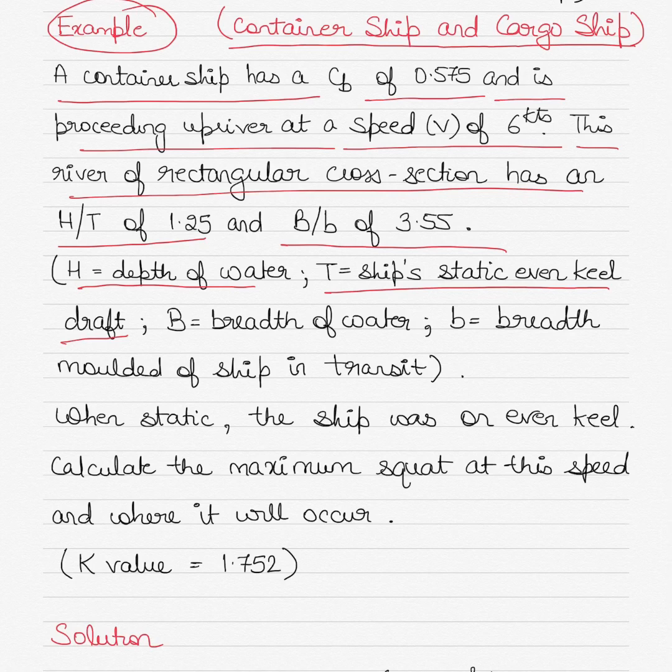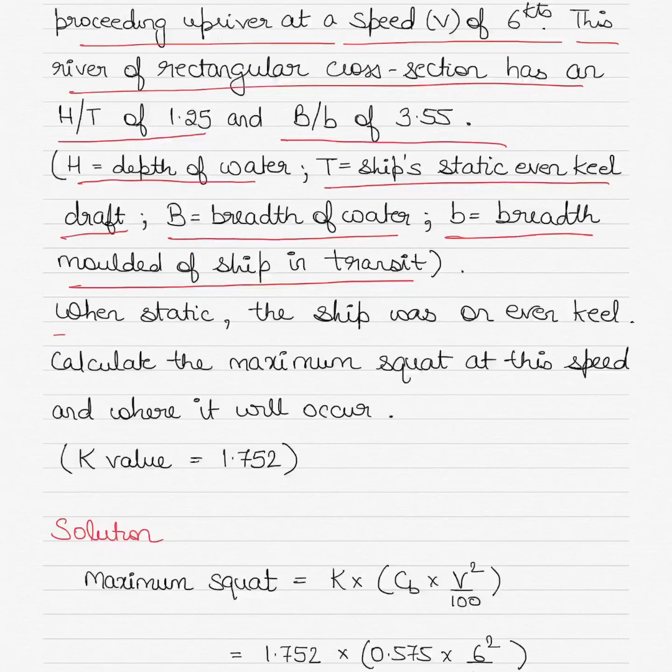So there is no listing or heeling. Capital B stands for the breadth of the water and small b stands for the molded breadth of the ship which is in transit. When static or stationary, the ship was on even keel. There was no list or heel.